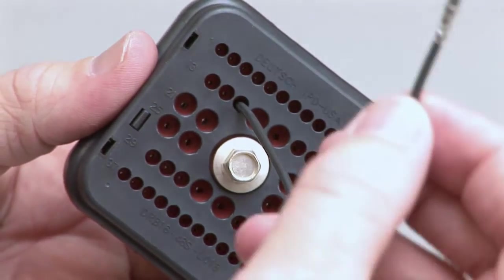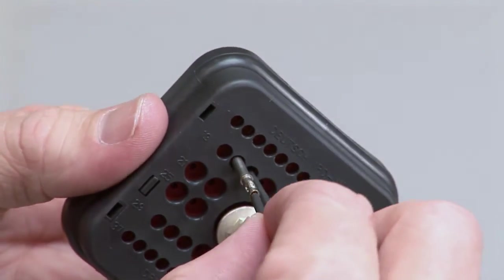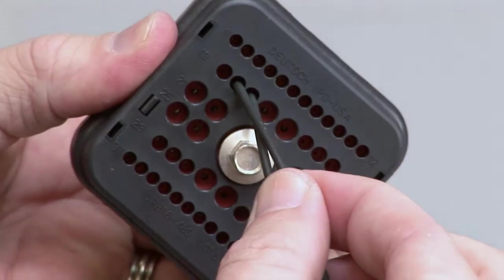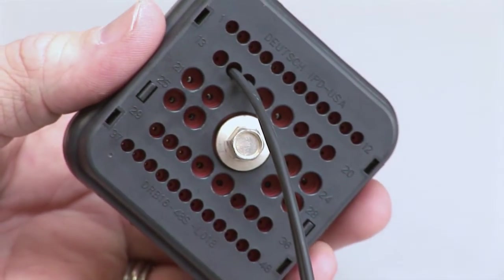Contacts should be fully inserted into the connector, with the locking fingers in place under the shoulder of the contact. Repeat this process until all of the cavities are filled.